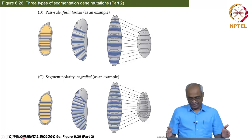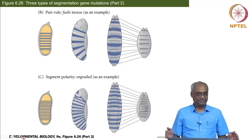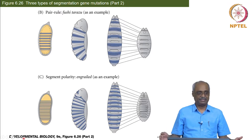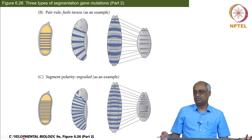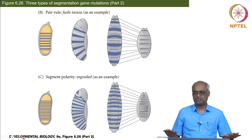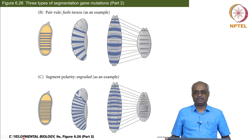To orient what we are learning: how an animal body plan is established — the asymmetry, where to form the head, where to form the tail, and how to make a head and not a tail there. This is established in the very early embryonic stage, which is why it is called embryonic patterning.